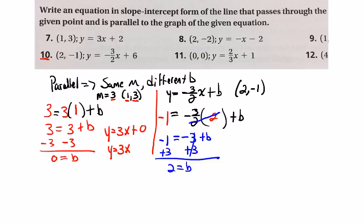Now we can write our equation, we're going to come back up here to this equation of y equals negative three over two x plus b. And instead of writing b, we're going to write two.